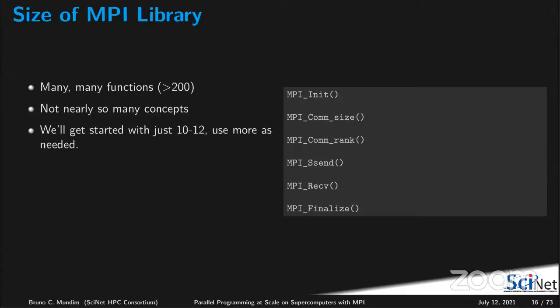The size of the MPI library is becoming huge — it might already be greater than 500 functions. However, the number of concepts is not that big. We can start with 10 or 12 different MPI functions and use more as needed. It is so big because for each concept you end up with several different functions that have different behaviors for the same kind of concept.